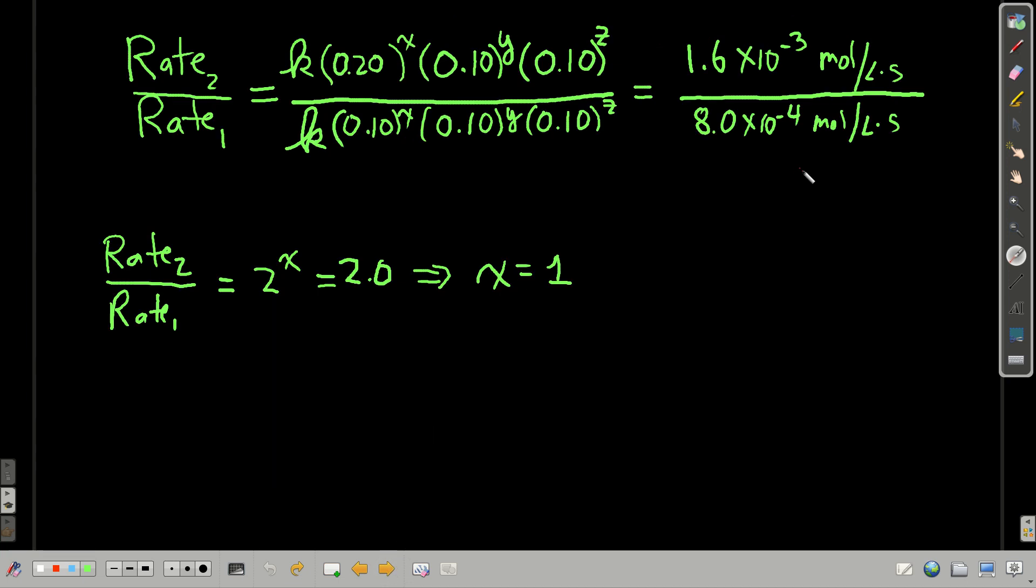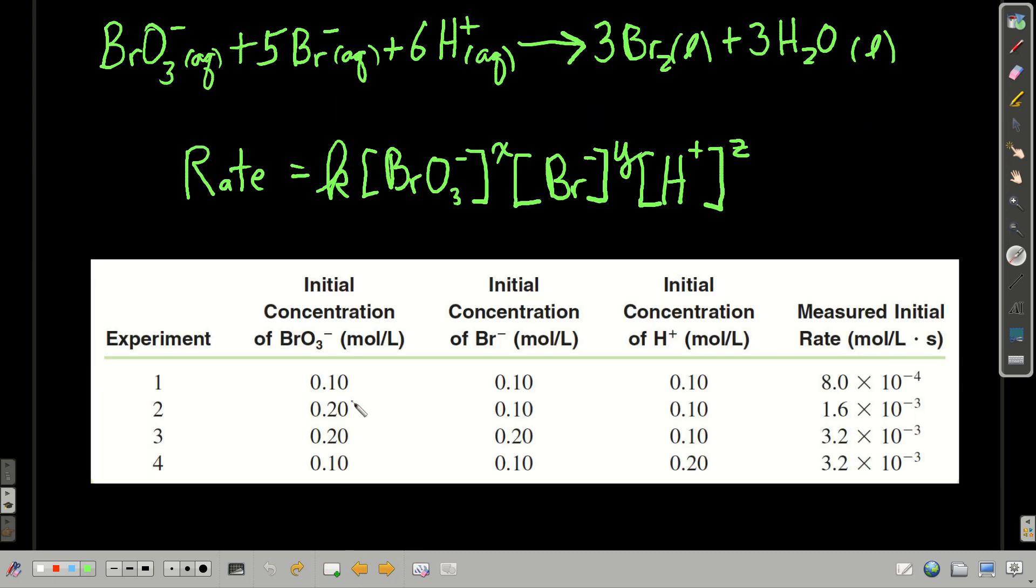So what we do is we take two sets of data. Let's go back and look at them. And what we're looking for is two sets of data where only one concentration changes. So if we take experiment two and experiment one, the only thing that changes, other than the rate of course, is the initial concentration of the bromide ion. Everything else is the same over both experiments.